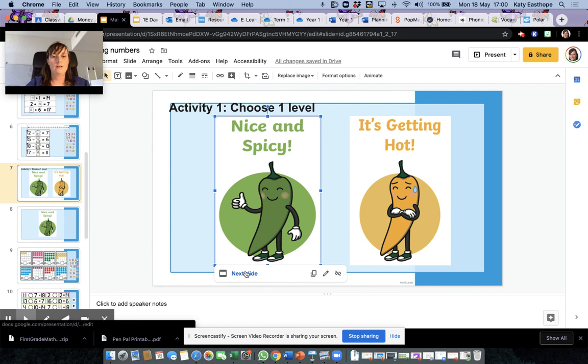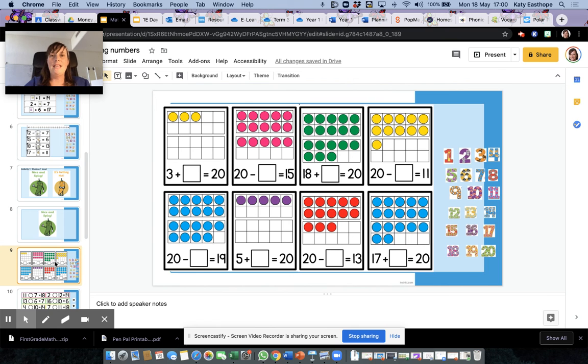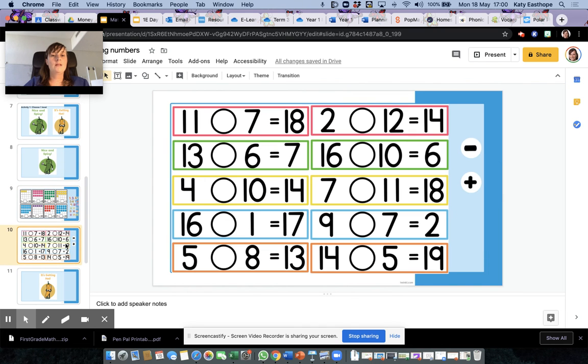Let's have a little look next, so nice and spicy. Now in here you've got number frames to help you. So 3 and what make 20? So if you want to, you can count these up, or you could use counting on, you could use a number line. I'll put the number line up here for you. Choose any of those methods that we've spoken about today. All the answers are over here that you can move them in. You've also got subtraction, so you need to look carefully because this one's a takeaway. So that's the first part, level one.